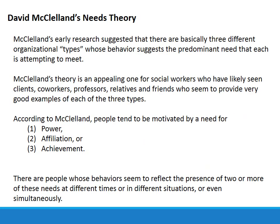Then we have David McClelland's needs theory. McClelland's early research suggested that there are basically three different organizational types whose behavior suggests the predominant need that each is attempting to meet. McClelland's theory is an appealing one for social workers who have likely seen clients, co-workers, professionals, relatives, and friends who seem to provide very good examples of each of the three types.